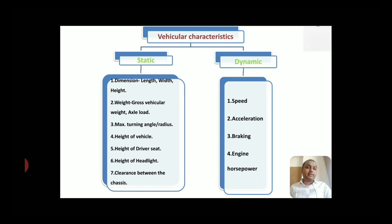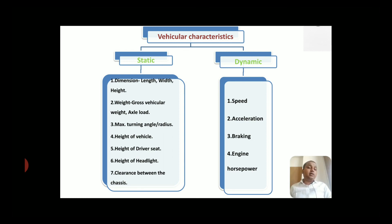Now moving towards vehicular characteristics. Vehicular characteristics are categorized into two types: static and dynamic. Under static, we have dimensions of the vehicle, weight of the vehicle, maximum turning angle, height of the driver's seat, height of the headlight, and clearance between the chassis — including center-to-center distance between chassis. You need all these dimensions because, based on the vehicle dimensions and weight, you plan the width of the road, the radius of curves, and when designing the pavement thickness, you need the vehicle weight.